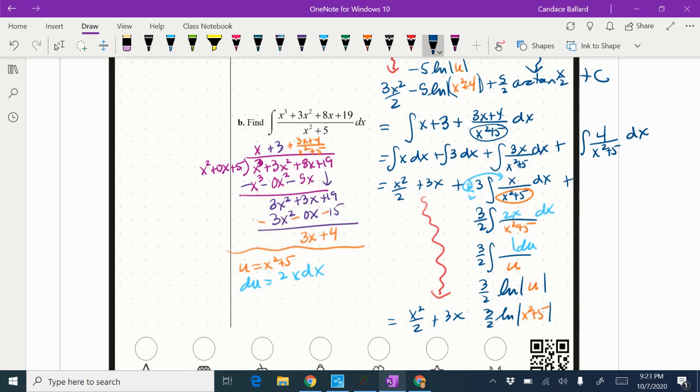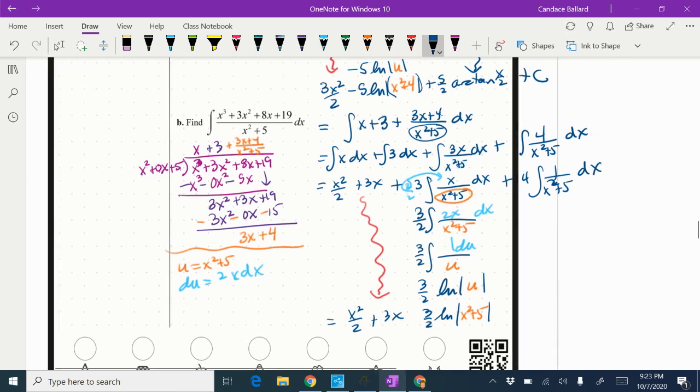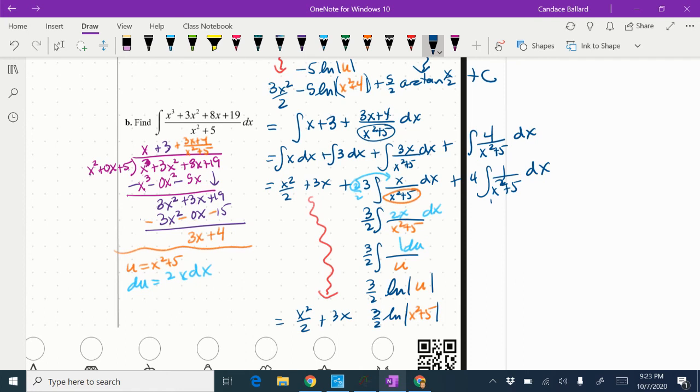All right, I'm going to rewrite this one here as 4, the integral of x squared plus 5 dx. Now this might not look like it, but this is actually an arctangent. It's with this being the u squared and this being the a squared. It's a really basic arctangent. So this one is actually your u equals x and your a equals the square root of 5.